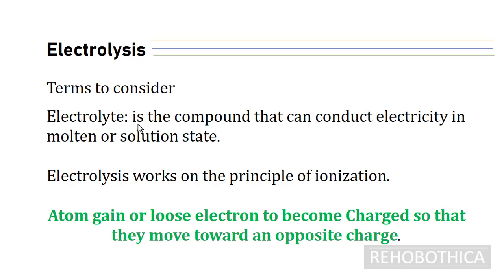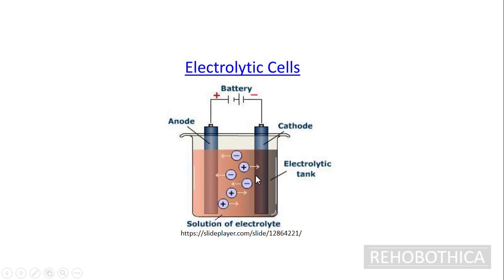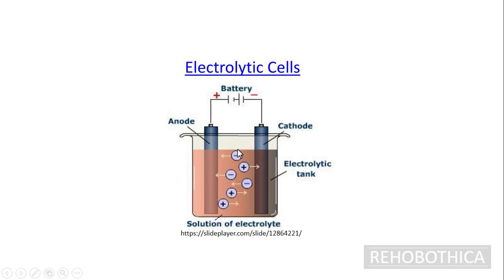To better explain this, let's look at sodium chloride. We have a sodium atom and a chlorine atom bonded together by an electrovalent bond. When they dissociate, we get sodium ions and chlorine ions. This is the setup of the electrolytic cell — it has an anode and a cathode, which are physical conductors. We also have the battery, which supplies our direct current. The anode is the positive electrode and the cathode is the negative electrode. The electrons flow in and then flow out, and we have a solution or molten compound which is the electrolyte.